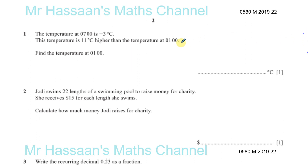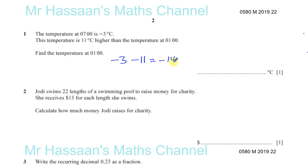Question number one: the temperature at 7am is minus 3 degrees Celsius. This temperature is 11 degrees higher than the temperature at 1am. Find the temperature at 1am. So if minus 3 degrees is 11 degrees higher than the temperature at 1am, that means the temperature at 1am is 11 degrees lower than minus 3 degrees. So minus 3 take away 11 gives minus 14. The answer is negative 14.